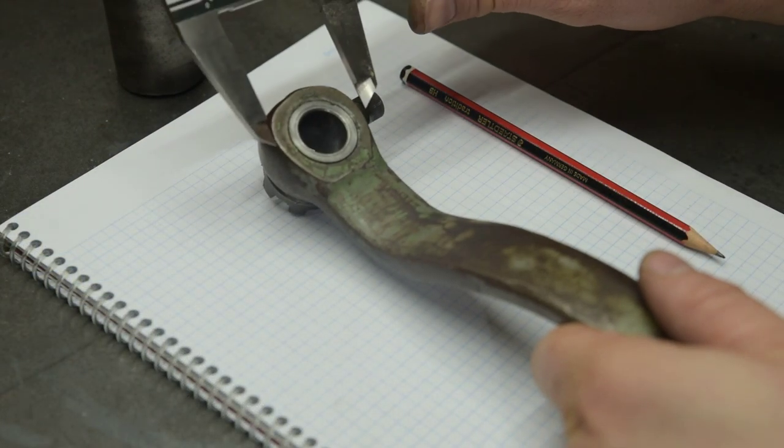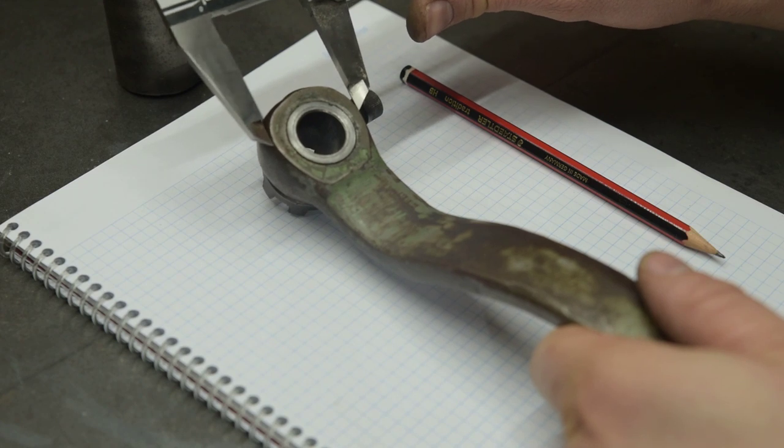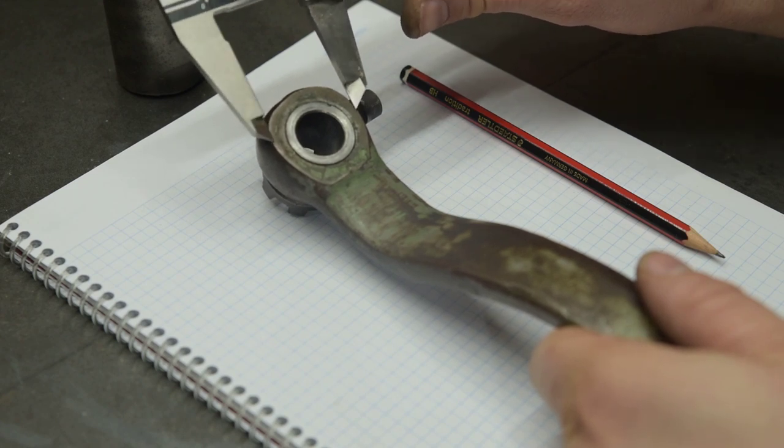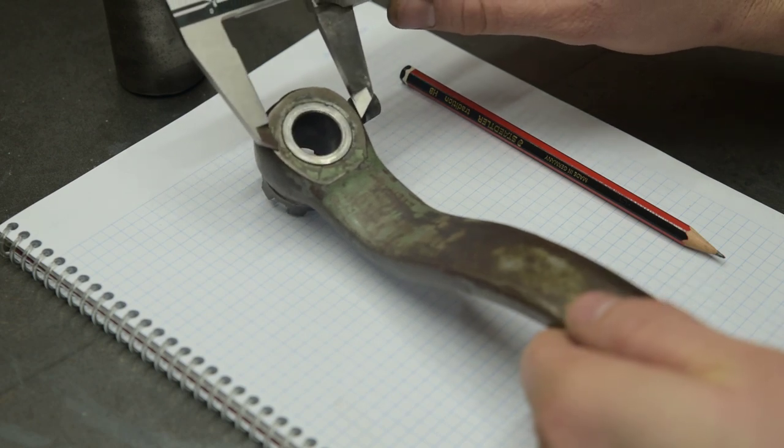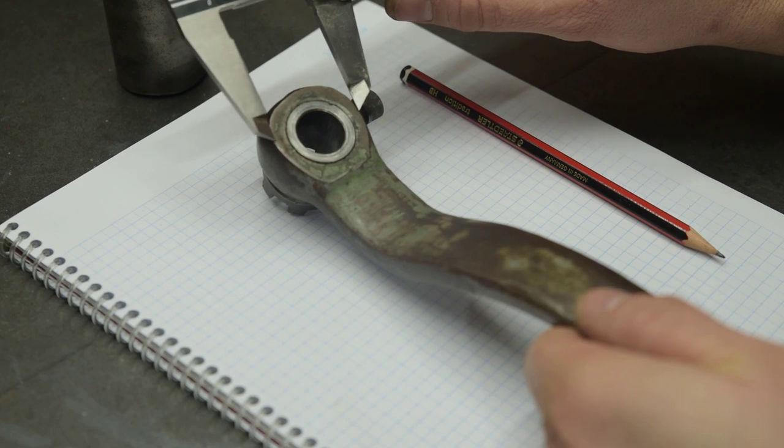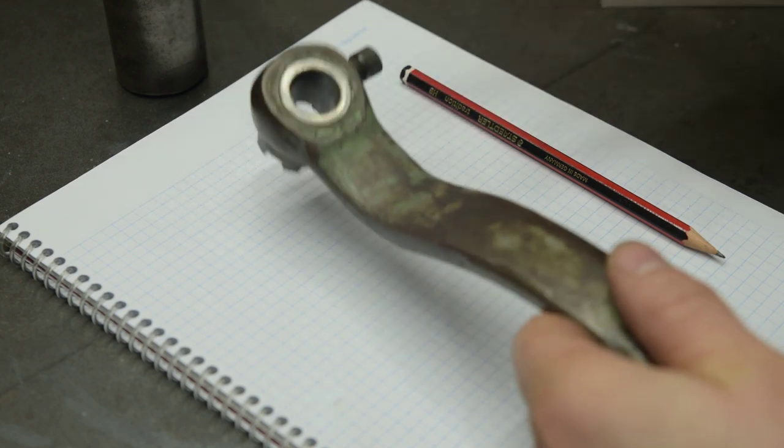Now I want this thing to be, I want the knob outer diameter to be no bigger than the corner of this forged bit or cast bit whatever this is, so let's make it 34mm OD.